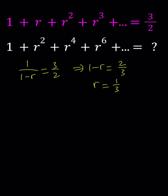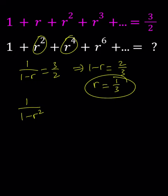Now, in the second equation, the common ratio is r squared instead of r, so that equals 1 over 1 minus r squared. But we know that r equals 1 third, so we can plug it in. 1 over 1 minus 1 ninth, that is the reciprocal of 8 ninths, which is 9 over 8.